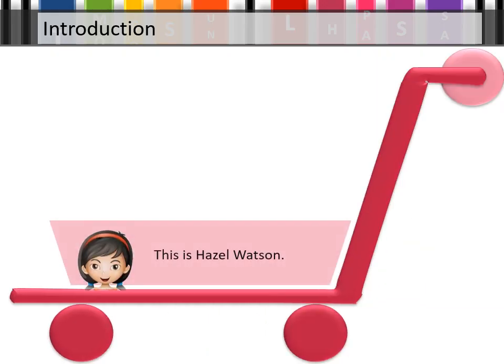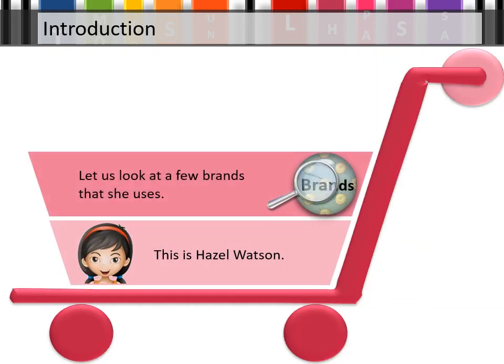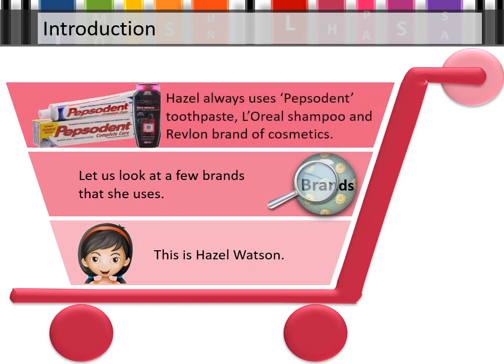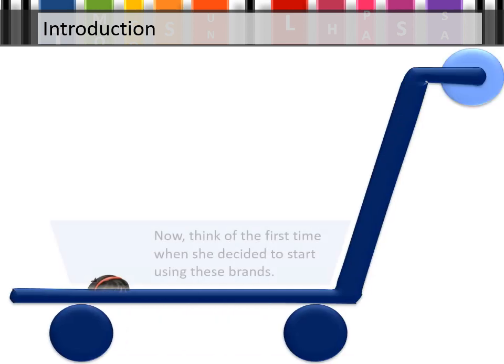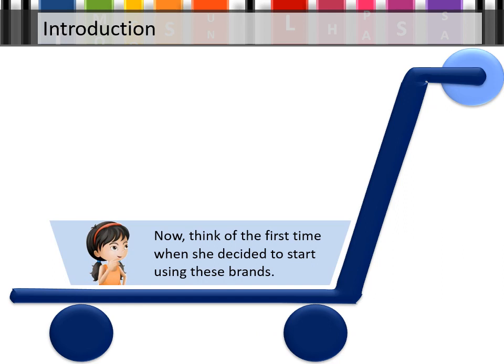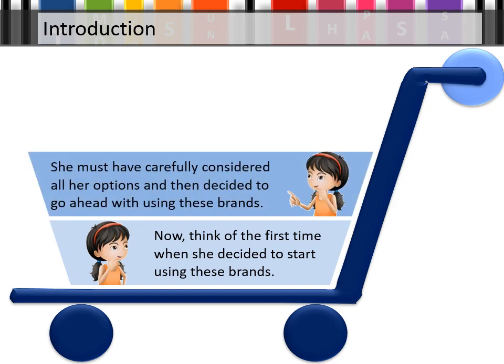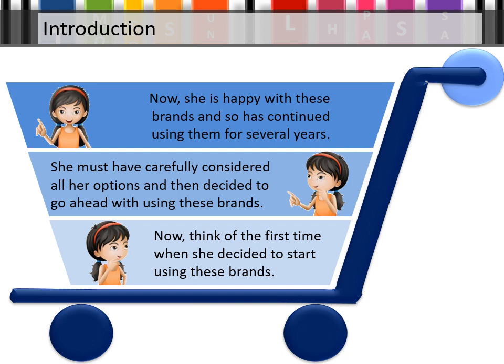This is Hazel Watson. Let us look at a few brands that she uses. Hazel always uses Pepsodent toothpaste, L'Oreal shampoo, and Revlon brand of cosmetics. Think of the first time when she decided to start using these brands. She must have carefully considered all her options, and then decided to go ahead with using these brands. Now, she is happy with these brands, and so has continued using them for several years.